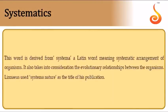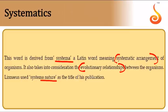When taxonomy also takes into consideration evolutionary relationships as well as comparative features, it is referred to as systematics. The word is derived from 'systema,' meaning systematic arrangement. Linnaeus published a book called Systema Naturae, in which he specifically dealt with the taxonomy of animals.